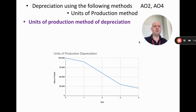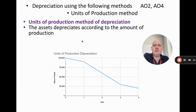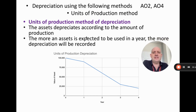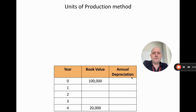That is the straight line depreciation method done. Let's move on to the units of production method, which is similar but has some nastier calculations. Units of production is when the value of the asset goes down according to the amount of production it does during that year. The more an asset is expected to be used in a year, the more depreciation will be recorded and the value of that asset will go down more during that year.